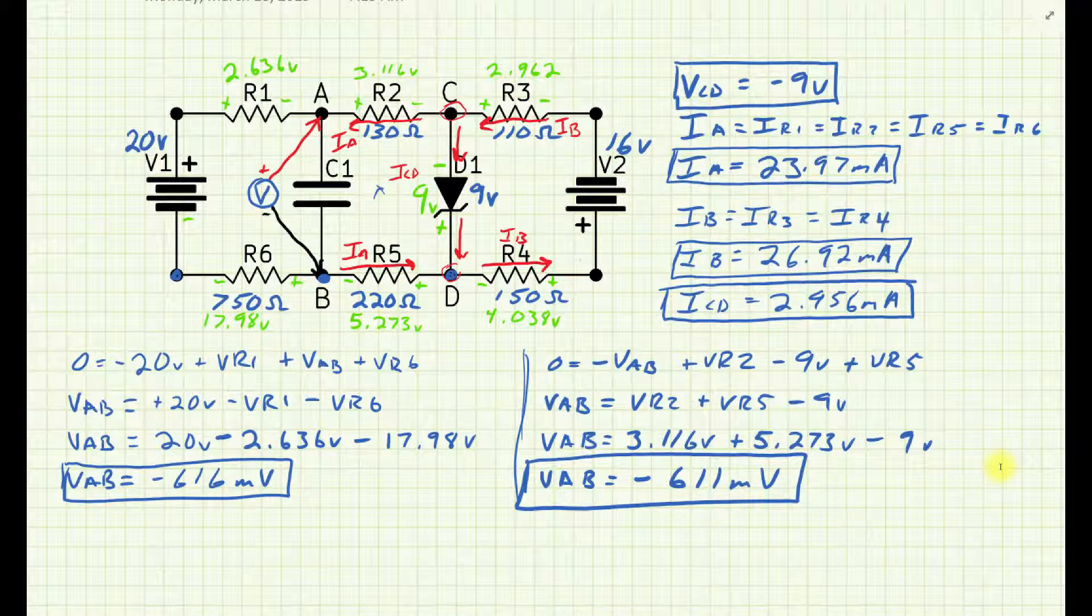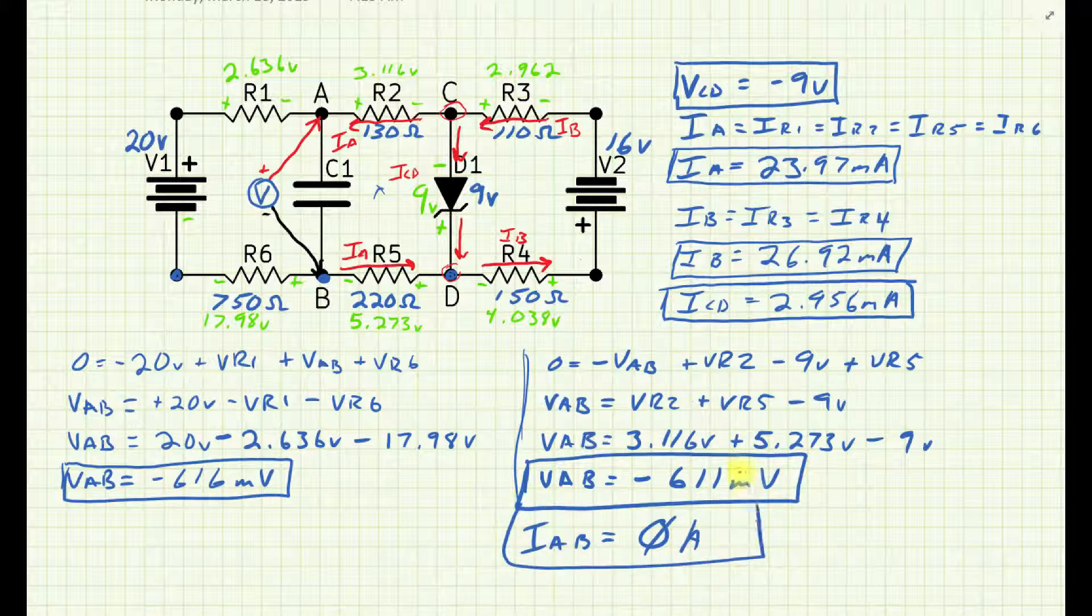Although this is kind of a small number, it's still pretty good. So VAB is minus 611 millivolts. The current between A and B, IAB, that's just zero amps. That capacitor is assumed to be a full charge, which is basically like an open. So the AB resistance would be like an infinite or an open between there. You could pull that capacitor out and it wouldn't really make any difference. There's no current flow there.